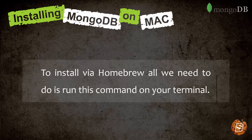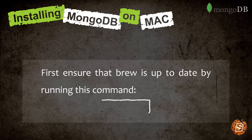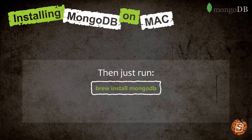The first one is installing via Homebrew. To install via Homebrew, all we need to do is run this command on your terminal. First of all we need to ensure that brew is up to date and we can do so by running the command brew update on our terminal. Then we just need to run brew install MongoDB and that's going to install MongoDB on a Mac operating system.